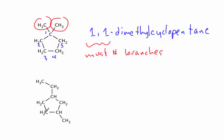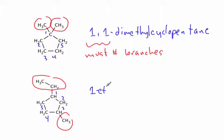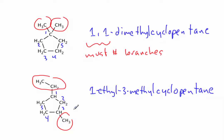Last example of naming: another cyclopentane. What I have here is an ethyl branch and a methyl branch. I can number a couple of ways, but numbering this way — one, two, three, four, five — minimizes branches, putting the ethyl on carbon one. You have to order them alphabetically, so this is going to be 1-ethyl-3-methylcyclopentane. Remember, alkyl groups are alphabetized. Another acceptable answer: if you made the carbon with the methyl branch carbon one, this would still be carbon three to minimize position, giving you 3-ethyl-1-methylcyclopentane — that is also an acceptable name.